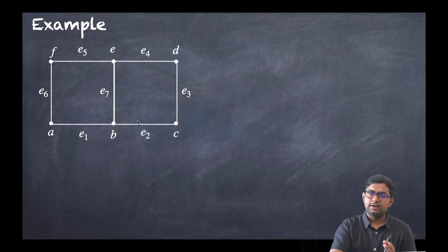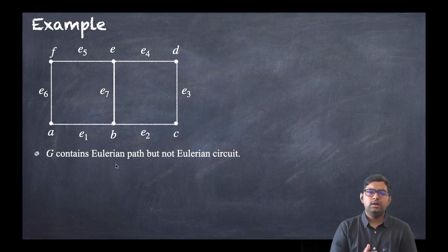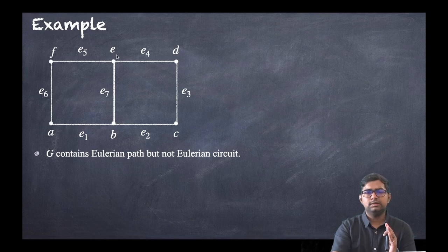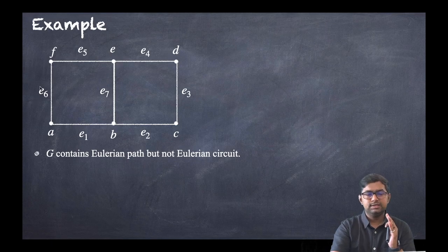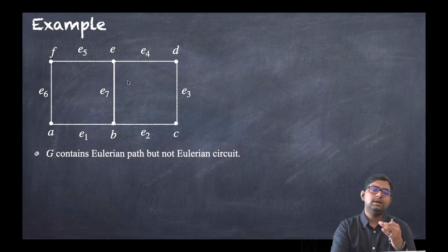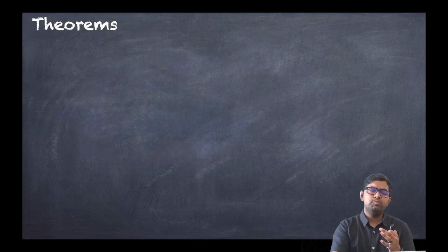Now consider this second graph. This graph contains an Eulerian path but not an Eulerian circuit. Starting from the middle vertex: E7, B, E6, A, then F, E5, E4, D, E3, C, E2, and B. We have covered all the edges, but it cannot form a circuit, so it is an Eulerian path but not an Eulerian circuit.